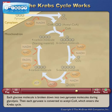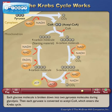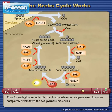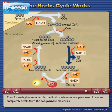Each glucose molecule is broken down into two pyruvate molecules during glycolysis. Then, each pyruvate is converted to acetyl CoA, which enters the Krebs cycle. Thus, for each glucose molecule, the Krebs cycle must complete two circuits to completely break down the two pyruvate molecules.